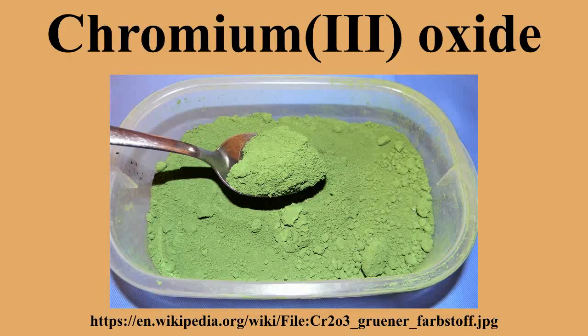Parisians Pannetier and Binet first prepared the transparent hydrated form of Cr2O3 in 1838 via a secret process, sold as a pigment. It is derived from the mineral chromite, Cr2O4. The conversion of chromite to dichromate Cr2O7, which is reduced with sulfur at high temperatures: Na2Cr2O7 + S → Na2SO4 + Cr2O3.